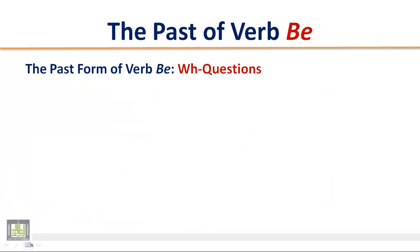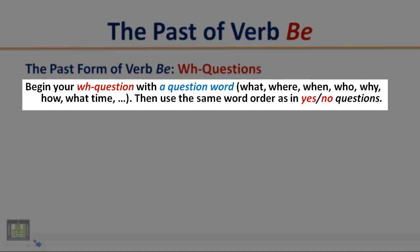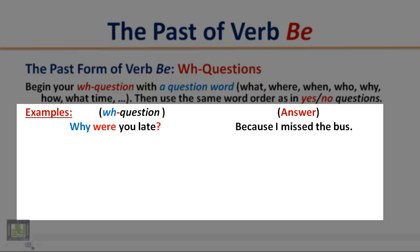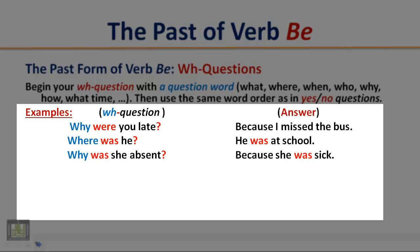The past form of verb B — WH questions. Begin your WH question with a question word such as what, where, when, who, why, how, what time, etc. Then use the same word order as in yes/no questions. Examples: Why were you late? Because I missed the bus. Where was he? He was at school. Why was she absent? Because she was sick. How was the weather? It was cold.